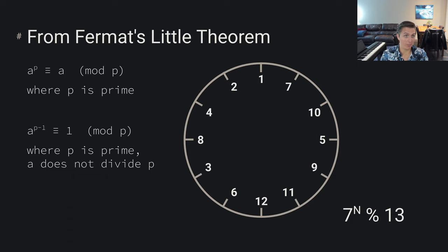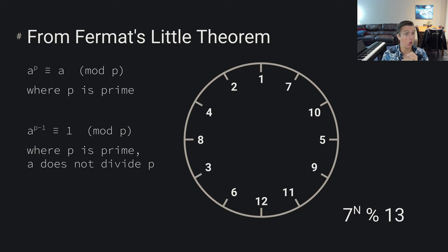From Fermat's Little Theorem, we can also say that a to the p minus 1 is congruent with 1 mod p, where p is prime and a does not divide p. That means 7 to the 12 mod 13 equals 1. This is always true for all prime numbers. So we can recover our initial integer by raising to p, and get to 1 by raising to p minus 1, all within these mod p groups.